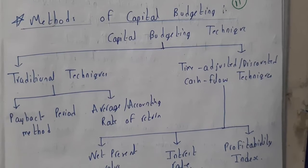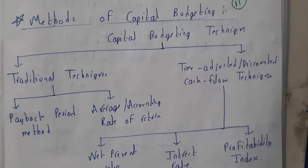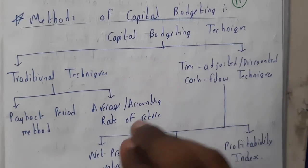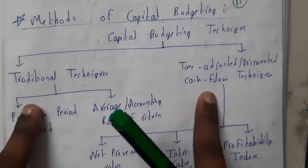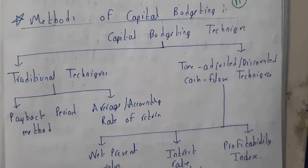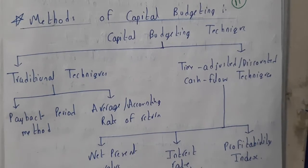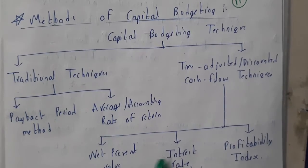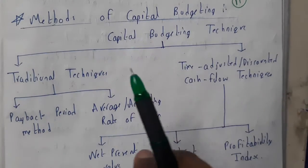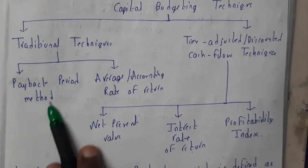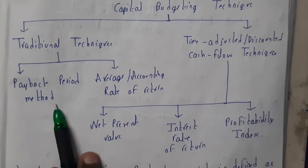Hello guys, we are back with our next lecture. In this lecture, let us go through the methods of capital budgeting. There are totally five methods, mutually divided into two types: traditional techniques and time-adjusting or discounted cash flow techniques. In this lecture we'll be going through the first topic — payback period — which is covered in the first of five different videos.